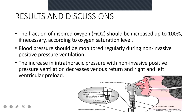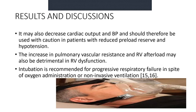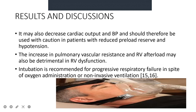The increase in intrathoracic pressure with non-invasive positive pressure ventilation decreases venous return and right and left ventricle preload. It may also decrease cardiac output and blood pressure, and should be used with caution in patients with reduced preload reserve and hypotension. The increase in pulmonary vascular resistance and right ventricular afterload may also be detrimental in right ventricle dysfunction.